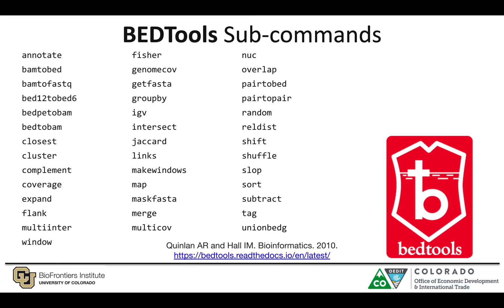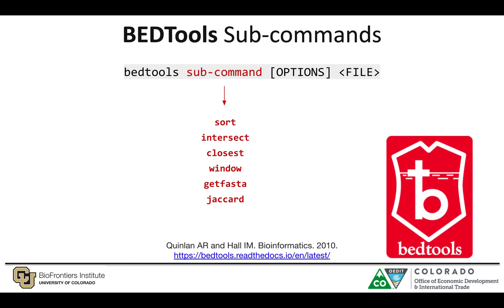Bedtools comes with a whole array of subcommands. I recommend going to the bedtools documentation to see all of them. For today, I'll highlight six subcommands: bedtools sort, bedtools intersect, bedtools closest, bedtools window, bedtools getfasta, and bedtools jaccard. To run bedtools, you specify bedtools, the subcommand, the options for that subcommand, and the input files.